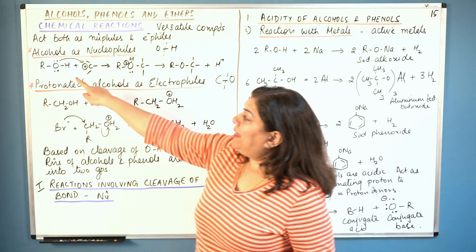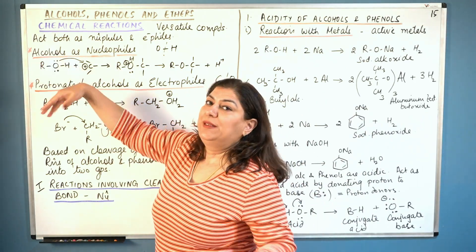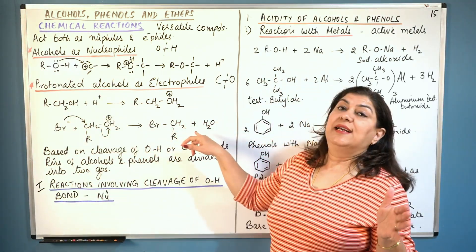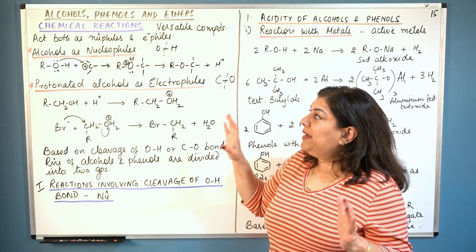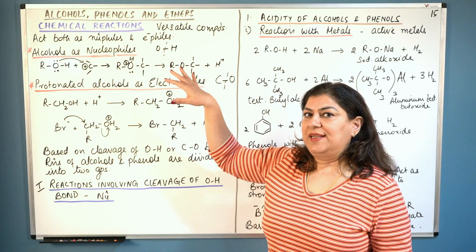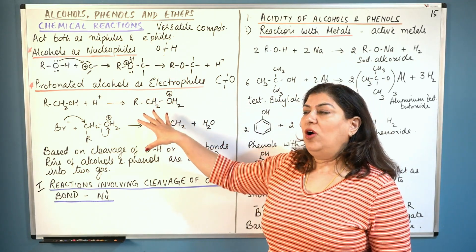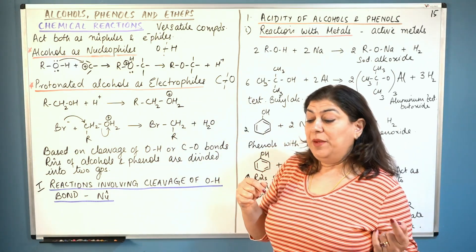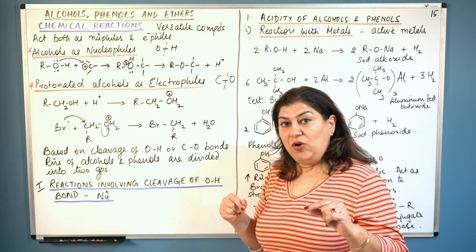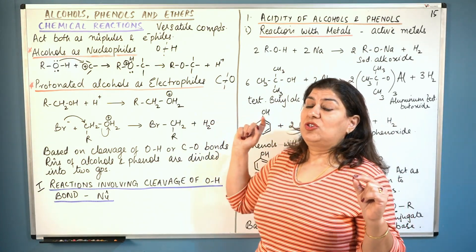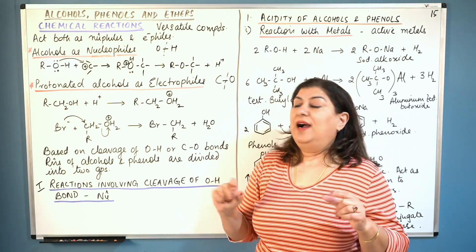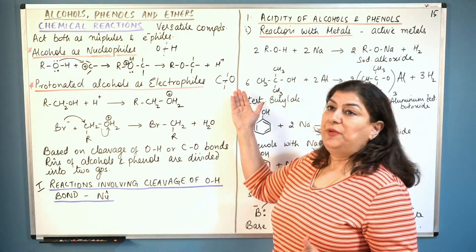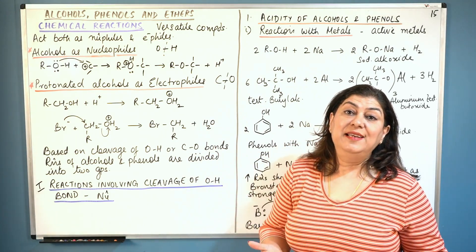But when the bond between carbon — the carbon of the methyl, ethyl or whatever alkyl group — and oxygen breaks, that is when it acts as an electrophile. Alcohols definitely act as electrophiles when the carbon-oxygen bond is broken. But in the case of phenols, the C-O bond only breaks with zinc; otherwise phenols do not show these reactions. Only with zinc would phenol show breaking of the C-O bond and act as an electrophile.